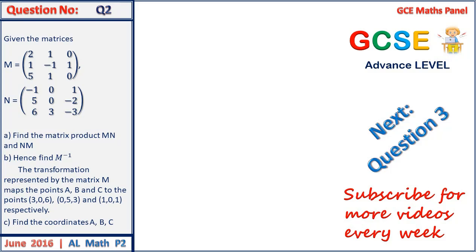According to this transformation, the points (3,0,6), (0,5,3), and (1,0,1) are respectively the images of the points A, B, and C. So what we have been given here are the images, and the transformation MP maps the points P to P prime.